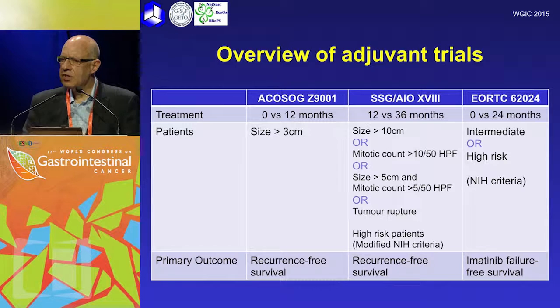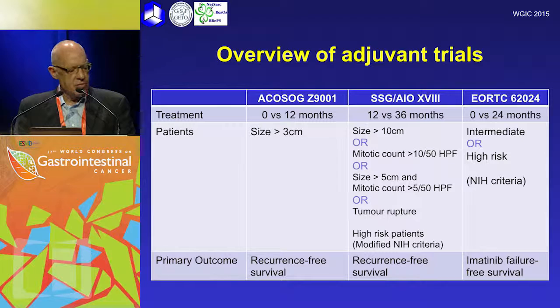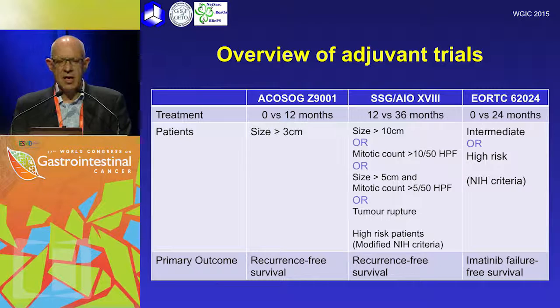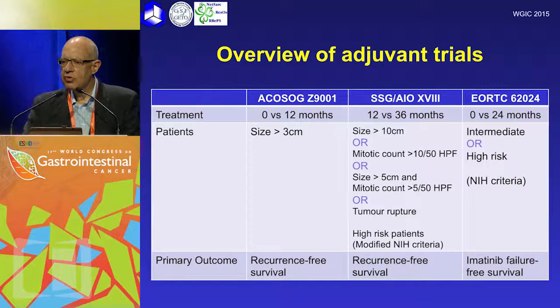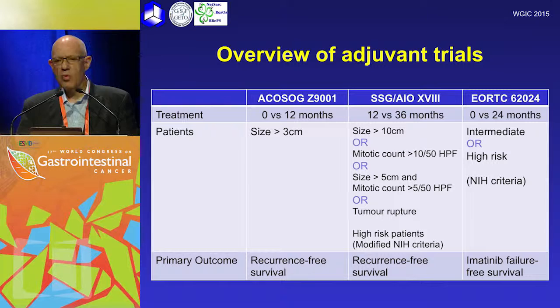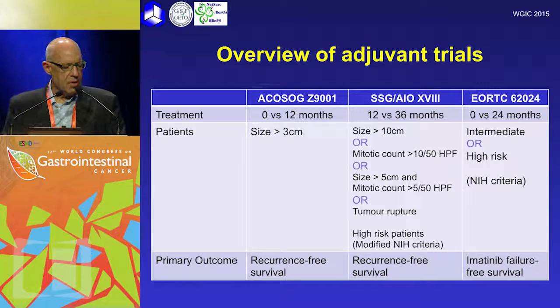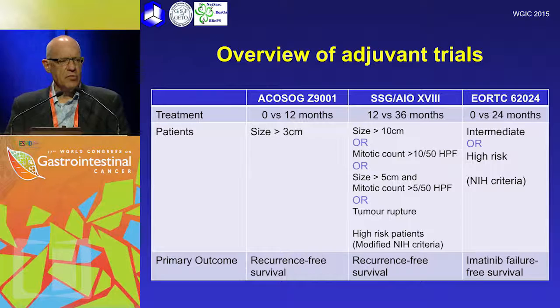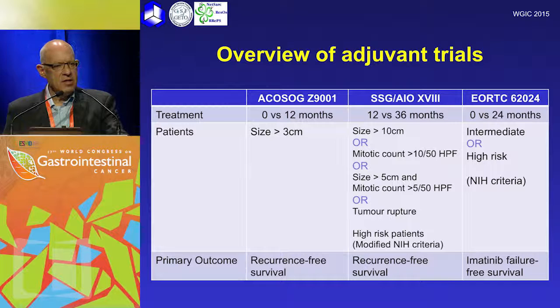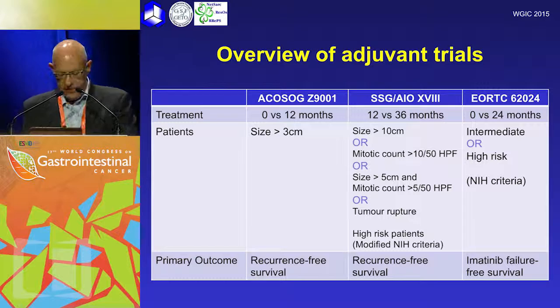Here are the three major phase 3 studies done in the adjuvant setting. The ACOSOG study Z9001 was done in North America: 0 versus 12 months of imatinib. The Scandinavian and German cooperative groups conducted a study of 12 versus 36 months. The EORTC study, in which the Australian group participated, compared no treatment versus two years of treatment. The ACOSOG and Scandinavian studies used recurrence-free survival as the primary endpoint. The EORTC study initially used overall survival but changed it to imatinib failure-free survival.